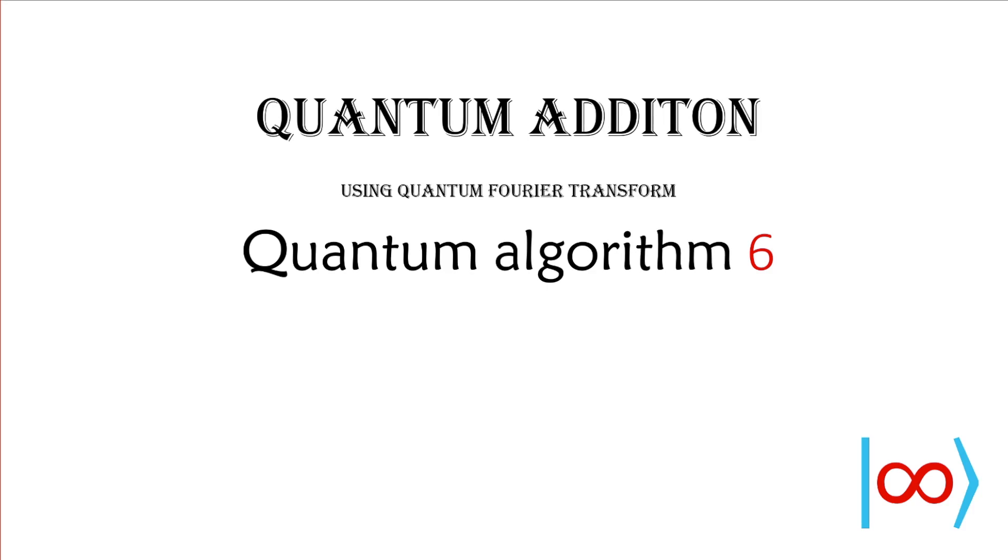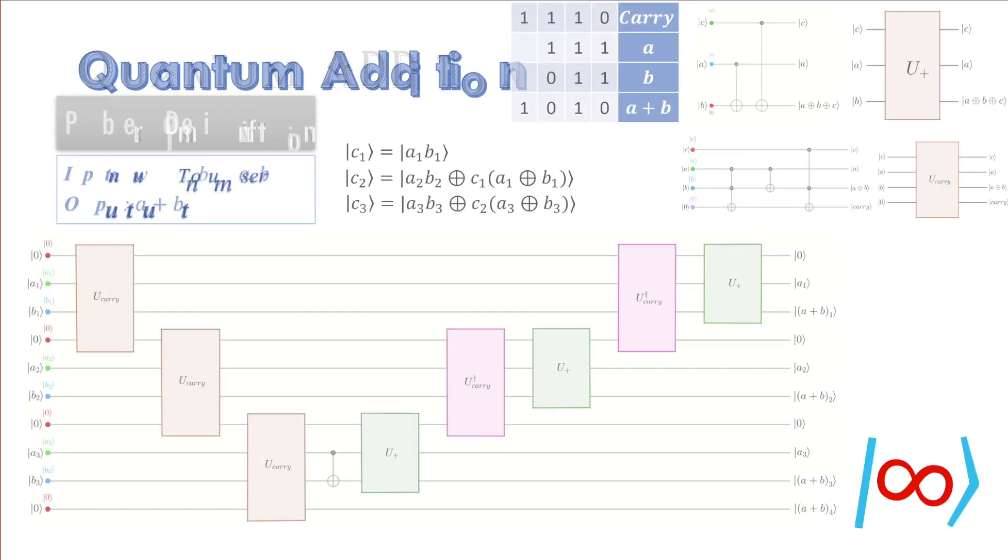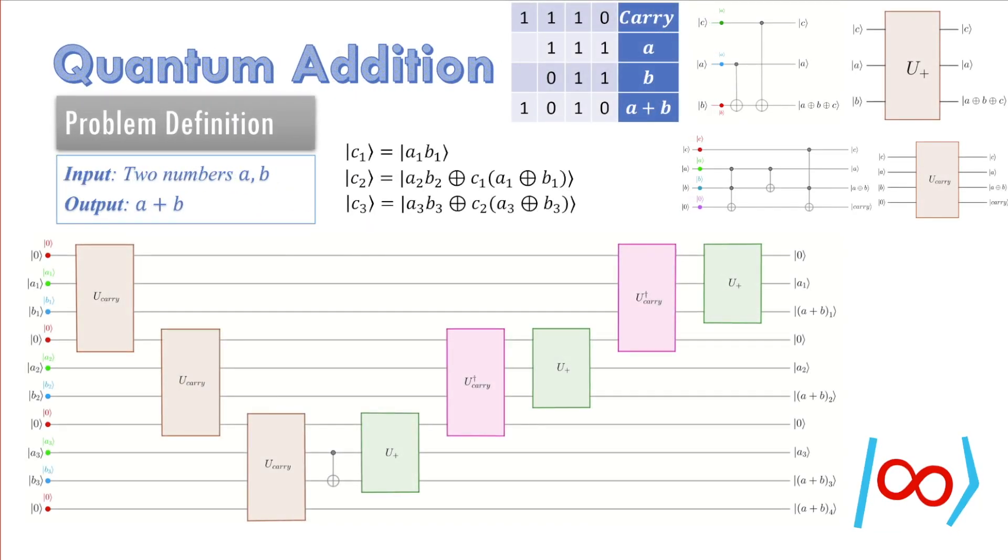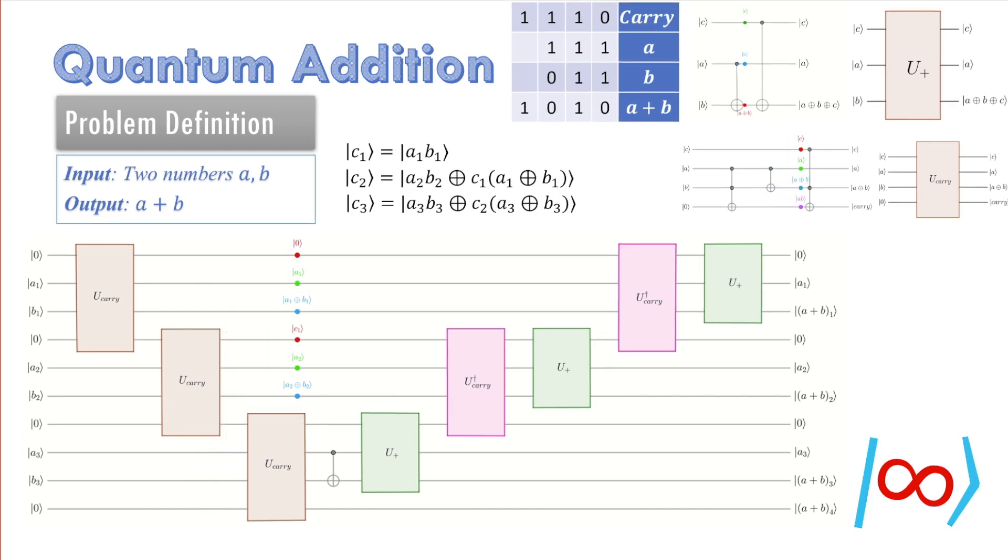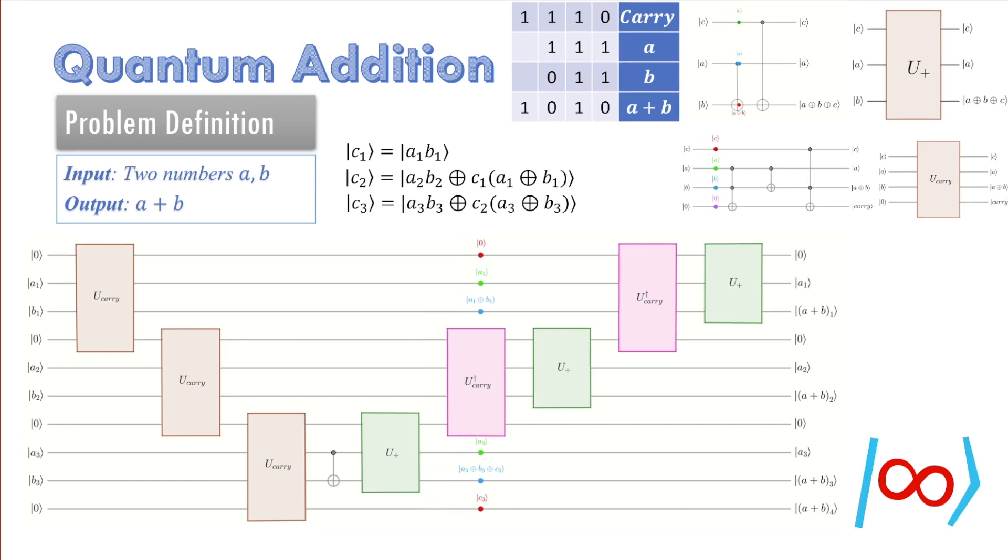In the 4th video in this series, I described how to add two numbers using an algorithm that mimics a classical algorithm for the same. You can click on the link to watch that video. Due to reversibility requirements, this algorithm takes 3n qubits. But it appears that this might not be the natural approach for adding numbers on a quantum computer.